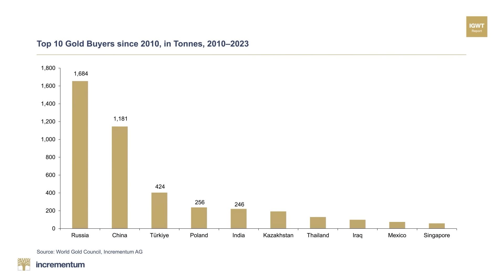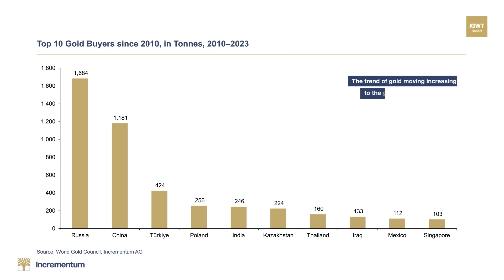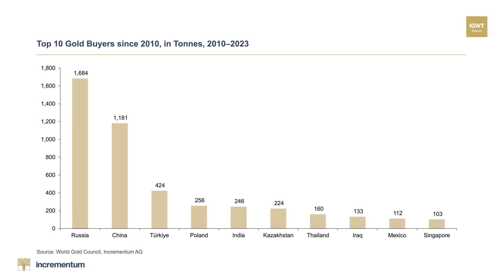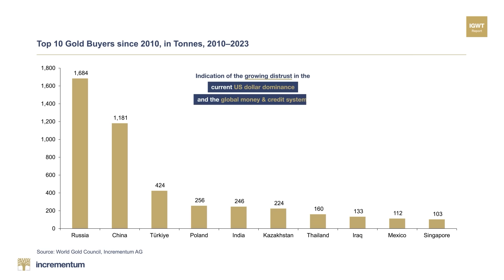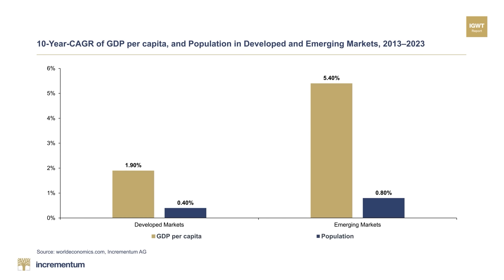The last few quarters have unequivocally validated one of our central hypotheses: the trend of gold moving increasingly to the global east is accelerating. In recent years, the central banks of the emerging countries have been the dominant marginal investors. This successive buildup of gold reserves can be seen as an indication of the growing distrust in the current U.S. dollar dominance and the associated global money and credit system. In numerous emerging markets, gold — particularly gold jewelry — holds a deep cultural and traditional significance, thereby enhancing consumer demand.